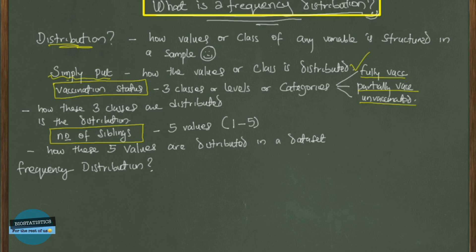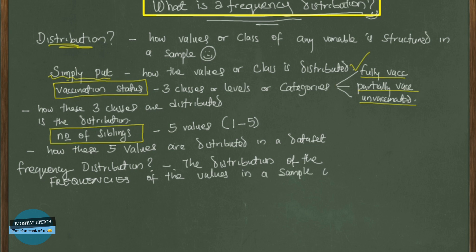So now, what is a frequency distribution? A frequency distribution is the distribution of the frequencies of those values or classes in a sample or a data set. So when we have those values and we've seen their frequencies, the distribution of those frequencies is the frequency distribution.